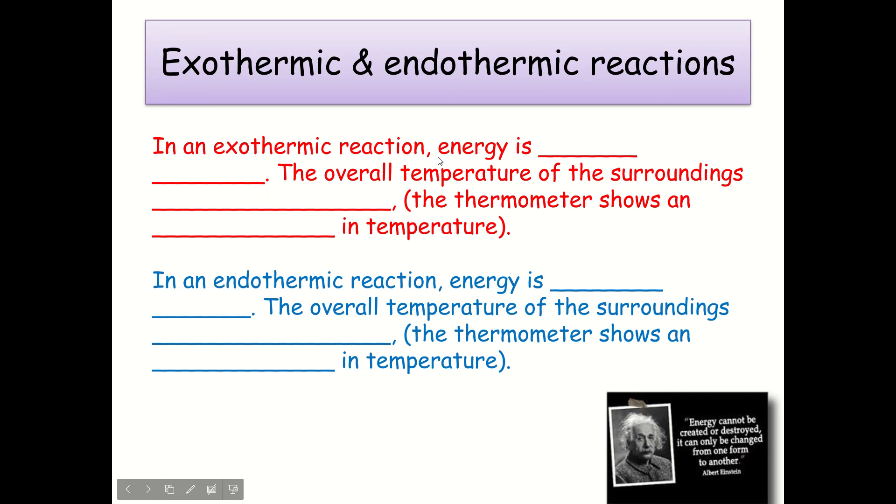So in an exothermic reaction, just to summarise, energy is given out. Now the overall temperature of the surroundings will then increase. So you could measure it on a thermometer and it would show an increase in temperature. But in an endothermic reaction, energy is taken in. So the overall temperature of the surroundings, measuring it, will decrease. And the thermometer shows a decrease in temperature.